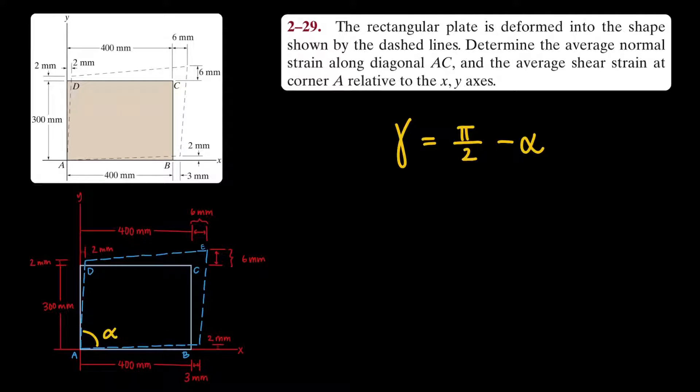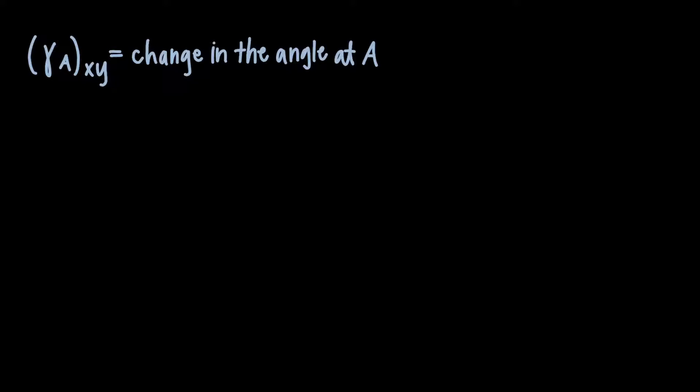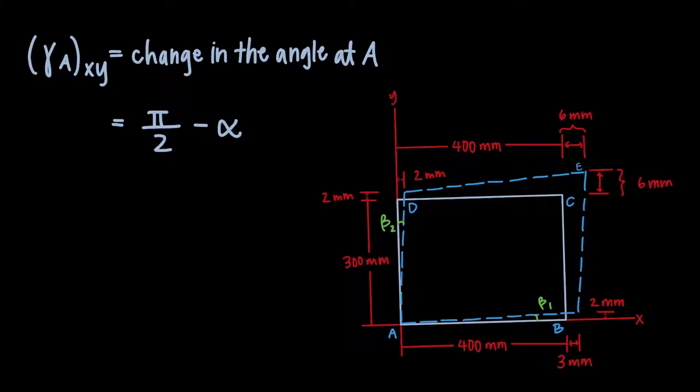You can see in the free body diagram that alpha is the angle between the dashed lines at corner A. Solving for alpha directly here is much more complicated because the dashed lines don't form any type of distinct quadrilateral, so it'll be difficult to use trigonometry. In cases like this, solving for the deformed angle is not always the most efficient method to solve for shear strain. Let's try another way. I want to reiterate that shear strain is essentially just finding the change in the angle. Instead of solving for the new angle, let's just solve for the angles that are left out. Check out the free body diagram. Beta 1 and beta 2 are the angles that are left out when the plate is deformed. The sum of these two values represent the change in the angle measure when corner A goes from a right angle to the acute angle alpha.